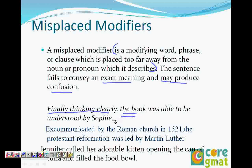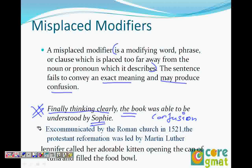The modifier 'finally thinking clearly' is modifying 'the book,' which doesn't make sense because a book cannot think. It should modify Sophie, since she is the person who can think. A corrected version would be: 'Finally thinking clearly, Sophie was able to understand the book' — the modifier must be placed next to Sophie.